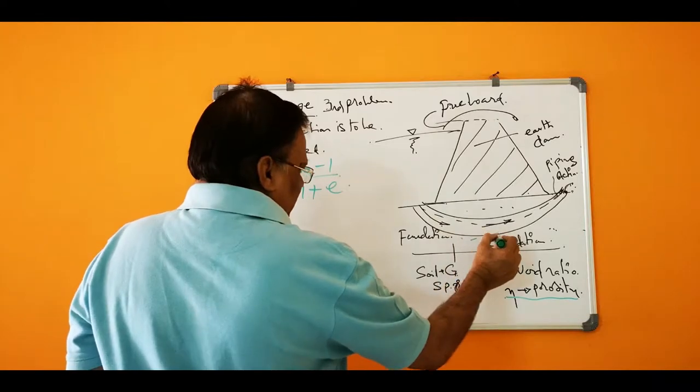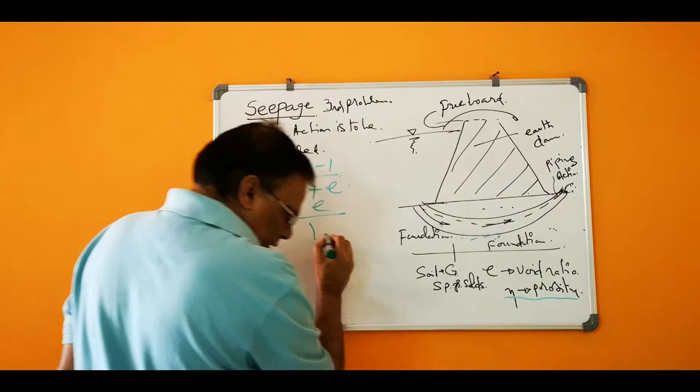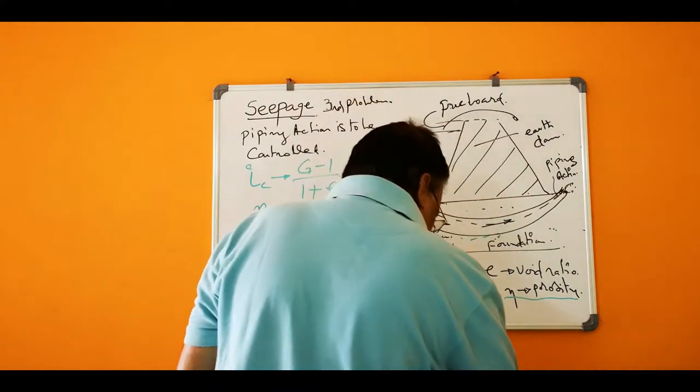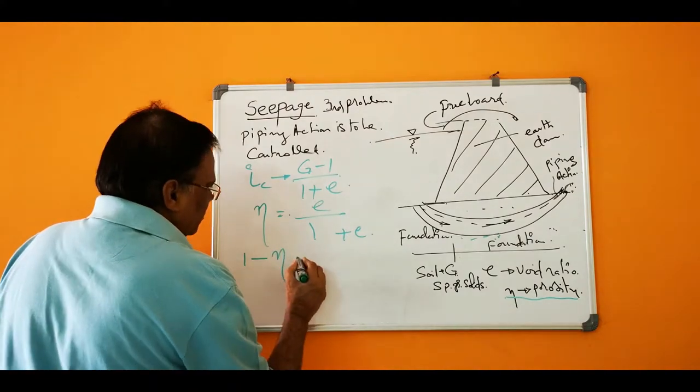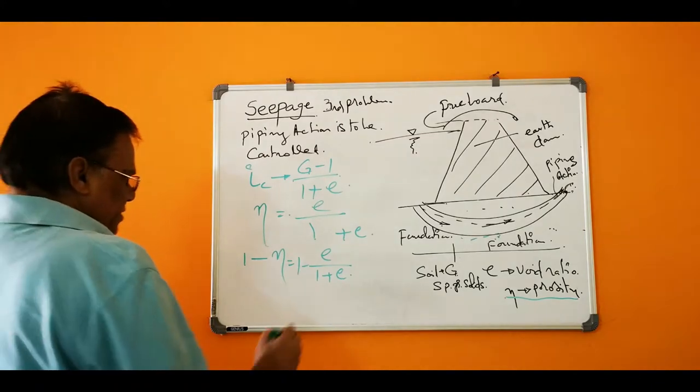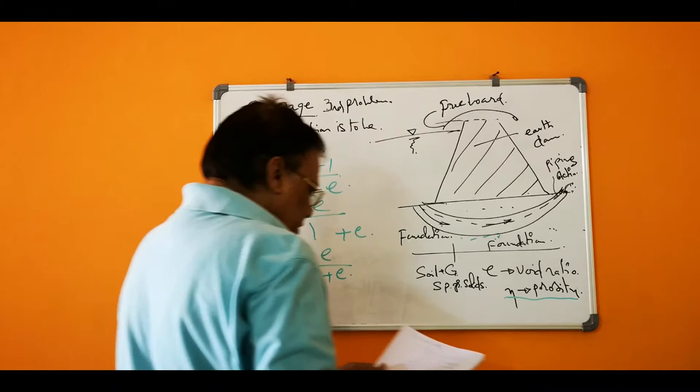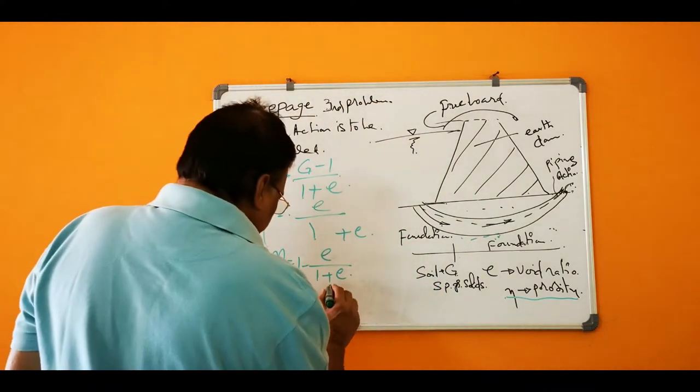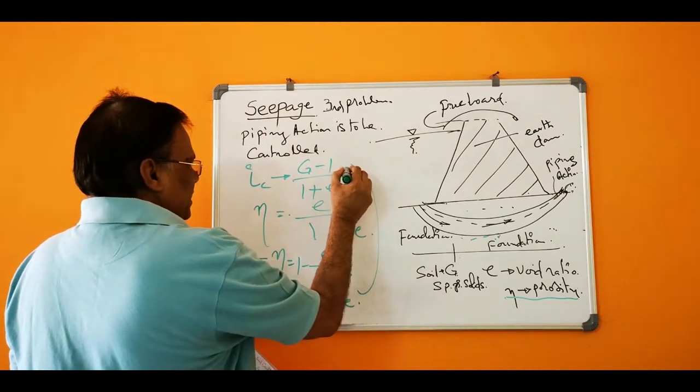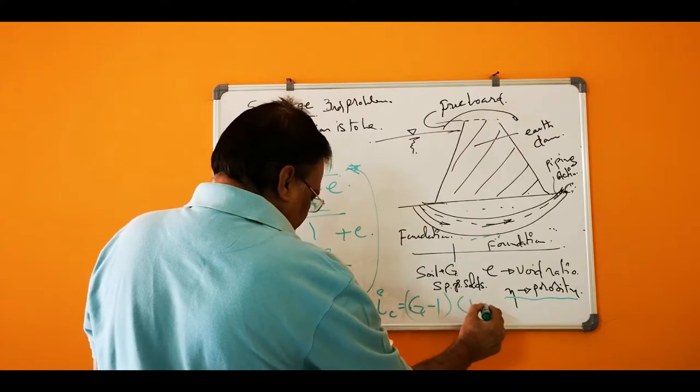The porosity is given as E by 1 plus E. Then 1 minus N is equal to E by 1 plus E. And this is equal to 1 minus E. Then E is equal to 1 by 1 plus E. And if you put it here...